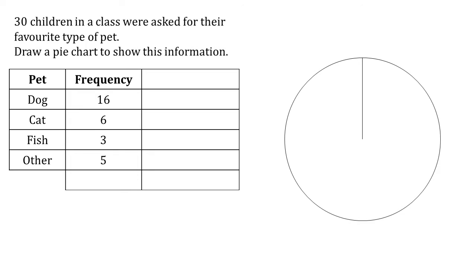We're told in the question that there are 30 children, so that's our total frequency. Let's just double check: 16 add 6, add 3, add 5 does indeed equal 30. We know that there are 360 degrees in a circle, so each child is going to be worth 360 divided by the total frequency of 30, which equals 12 degrees.